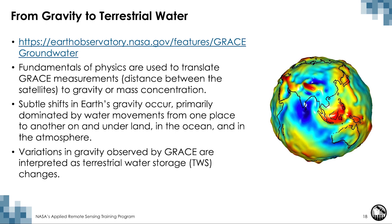The GRACE measurements — the distance between the satellites — are converted to gravity or mass concentrations based on the fundamentals of physics. Subtle shifts in Earth's gravity occur primarily due to water movements. As water moves from one place to another — within the atmosphere, on and under the land surface, and in the ocean — it affects Earth's gravity. GRACE missions measure these changes in gravity and then they are interpreted as changes in terrestrial water storage, or TWS.